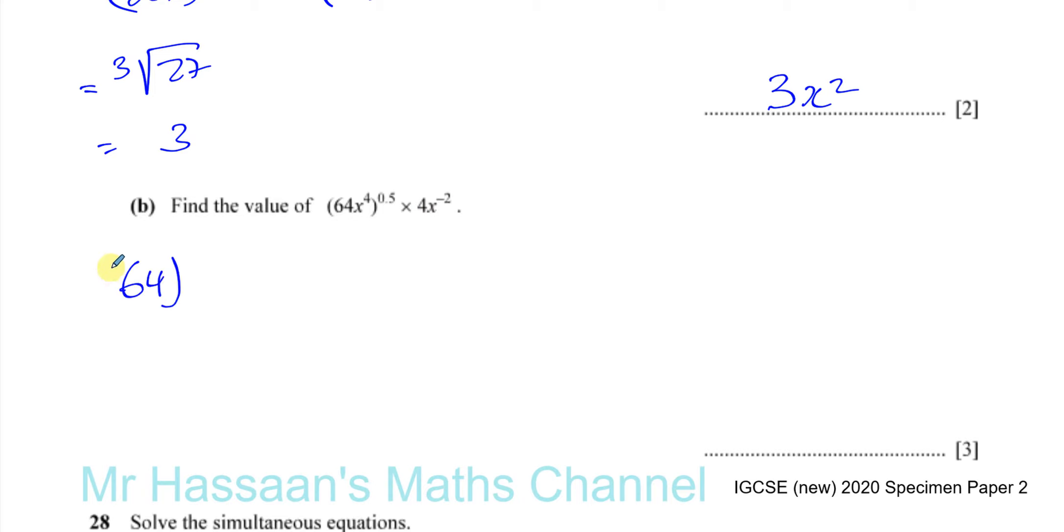This is 64 to the power of 0.5, which is the same as to the power of a half, and this is x to the power of 4 to the power of a half. Or you can call it 0.5 still, no problem, same thing. So this is going to give you the square root of 64, which is 8.